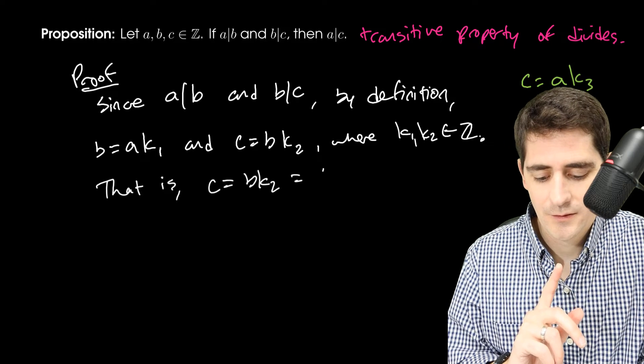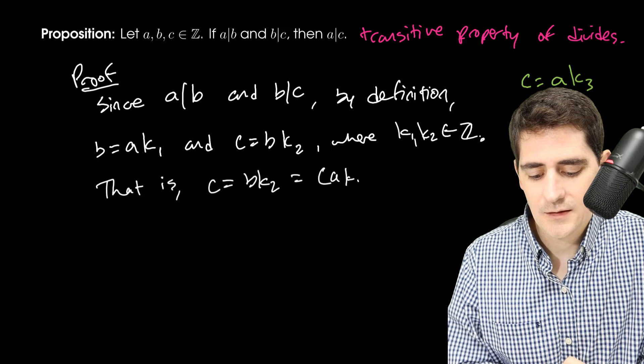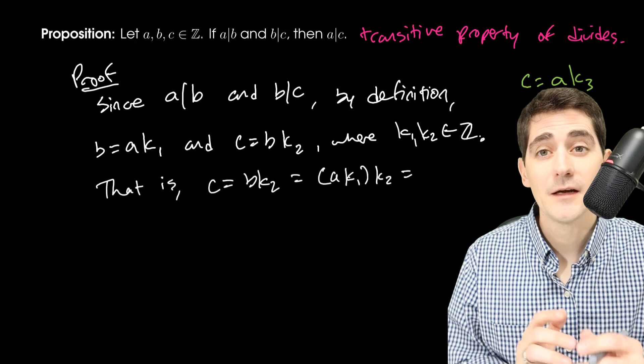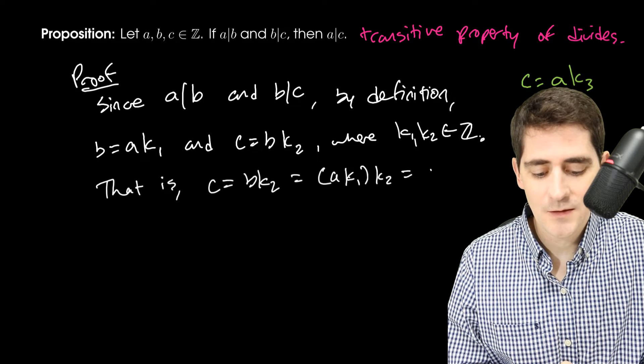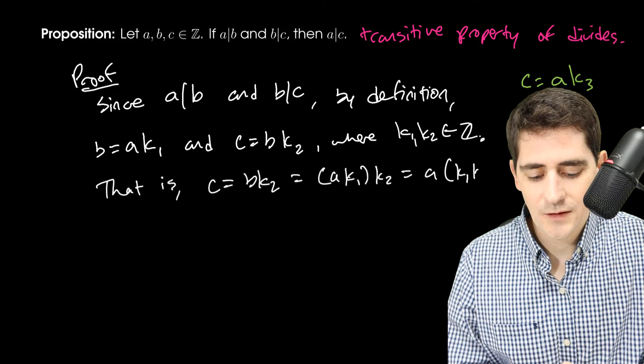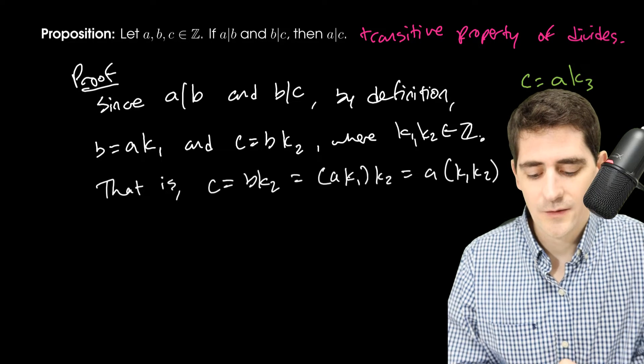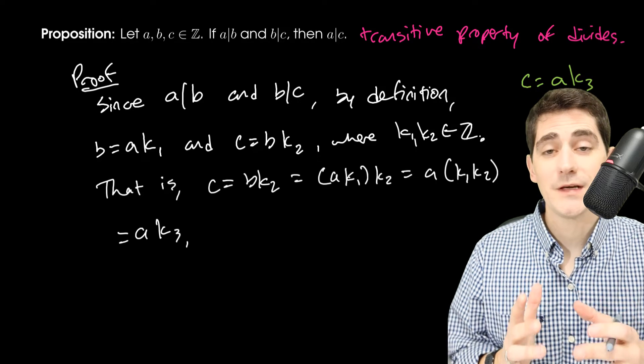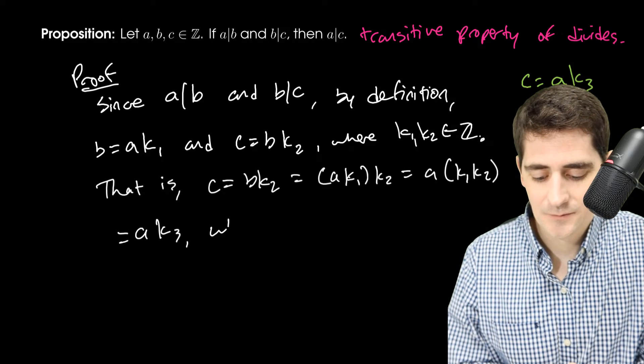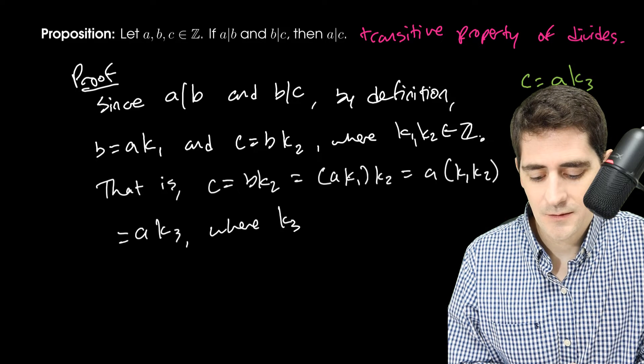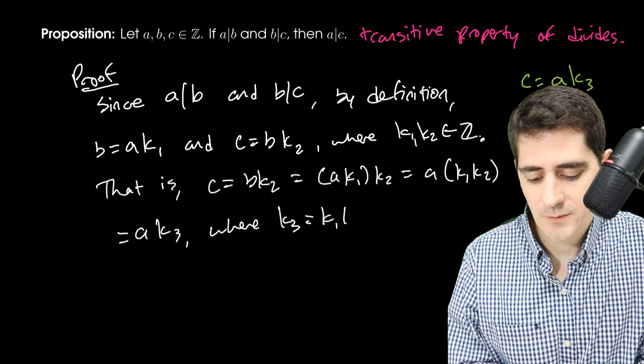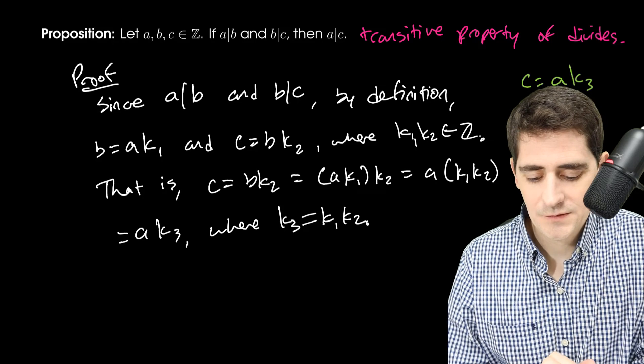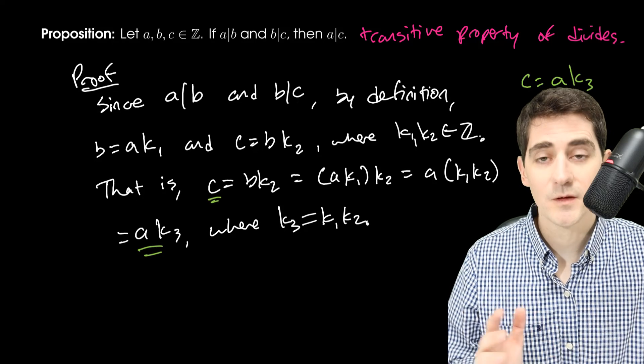But B, remember, is AK1 times K2. And then I can use the associative property of multiplication to bring the K1 and K2 together. And then we will call that K3. Because if I multiply two integers together, I get an integer. We'll say where K3 equals K1 times K2.